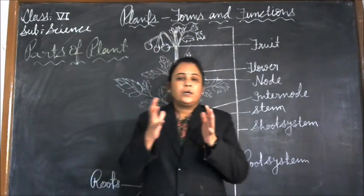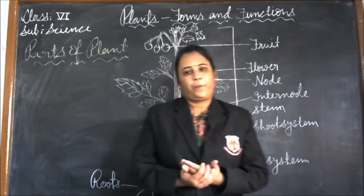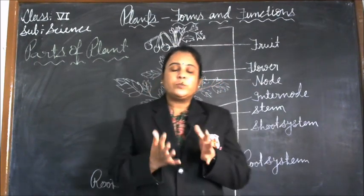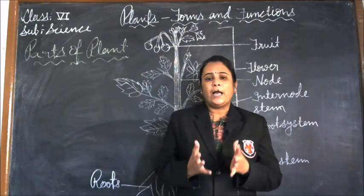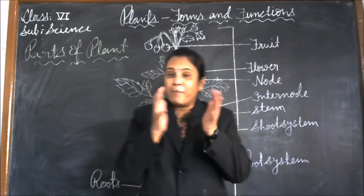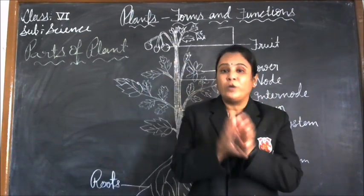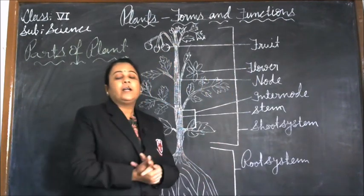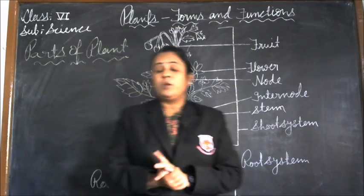Next, roots anchor the plant to the soil. The most important function of roots is to prevent soil erosion by binding the particles of soil together. Now, the function of stem.